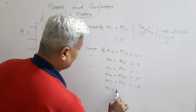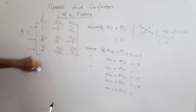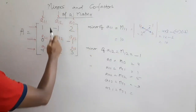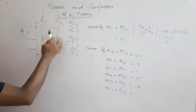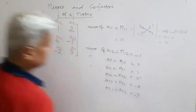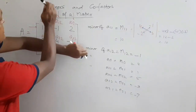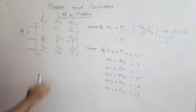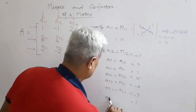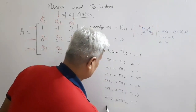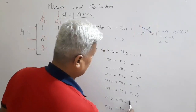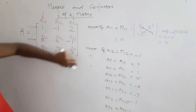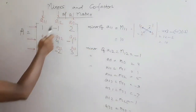For the third row: M31 — cover third row and first column, leaving minus 1, 2, 4, minus 1. Determinant: (minus 1 times 1) = minus 1, and 1 minus 8 = minus 7. So M31 is minus 7. M32 — cover third row, second column, leaving minus 1 times 1 minus 0 = minus 1. And M33 — cover third row and third column, leaving 1, minus 1, 0, 4. Determinant: 4 times 1 minus 0 = 4.